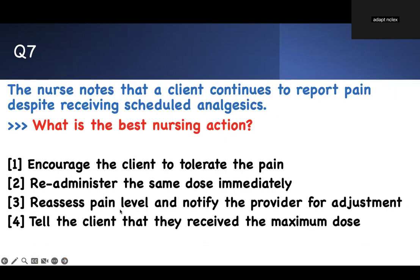Question seven: a nurse notes the client continues to report pain despite receiving scheduled analgesics. What would you do? Options: encourage the client to tolerate the pain; re-administer the same dose; re-assess their pain level and notify the doctor for adjustment; or tell the client they may receive the maximum dose. Encouraging tolerance is not a good idea. Giving the same dose when it's not working won't help. Maximum dose is essentially overdose. Assess the pain level — has it gone down from 10 to 5? If not, you know what to do. Do not intervene without re-assessing after giving pain medication. Number three is the best answer.